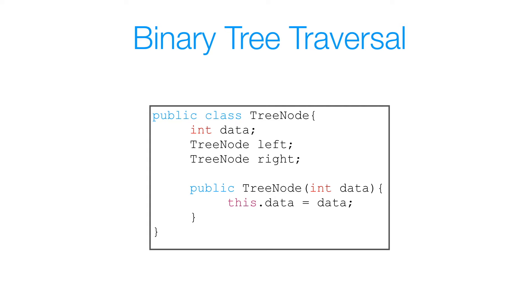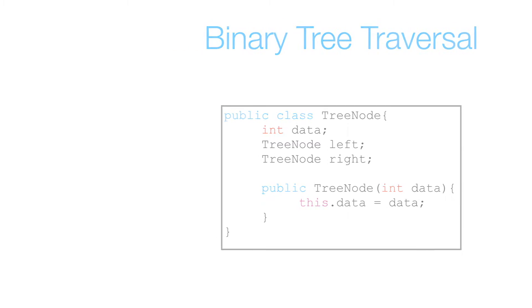Now let's take a look at the tree class that we will be implementing these methods inside of. Here we have a tree node class that will represent our entire binary tree. We have three instance variables: data, associated with every node, and left and right reference variables for the left and right subtrees respectively. We also have a constructor that takes in some data to initialize the instance variable. Now let's get to the actual implementation of these methods.